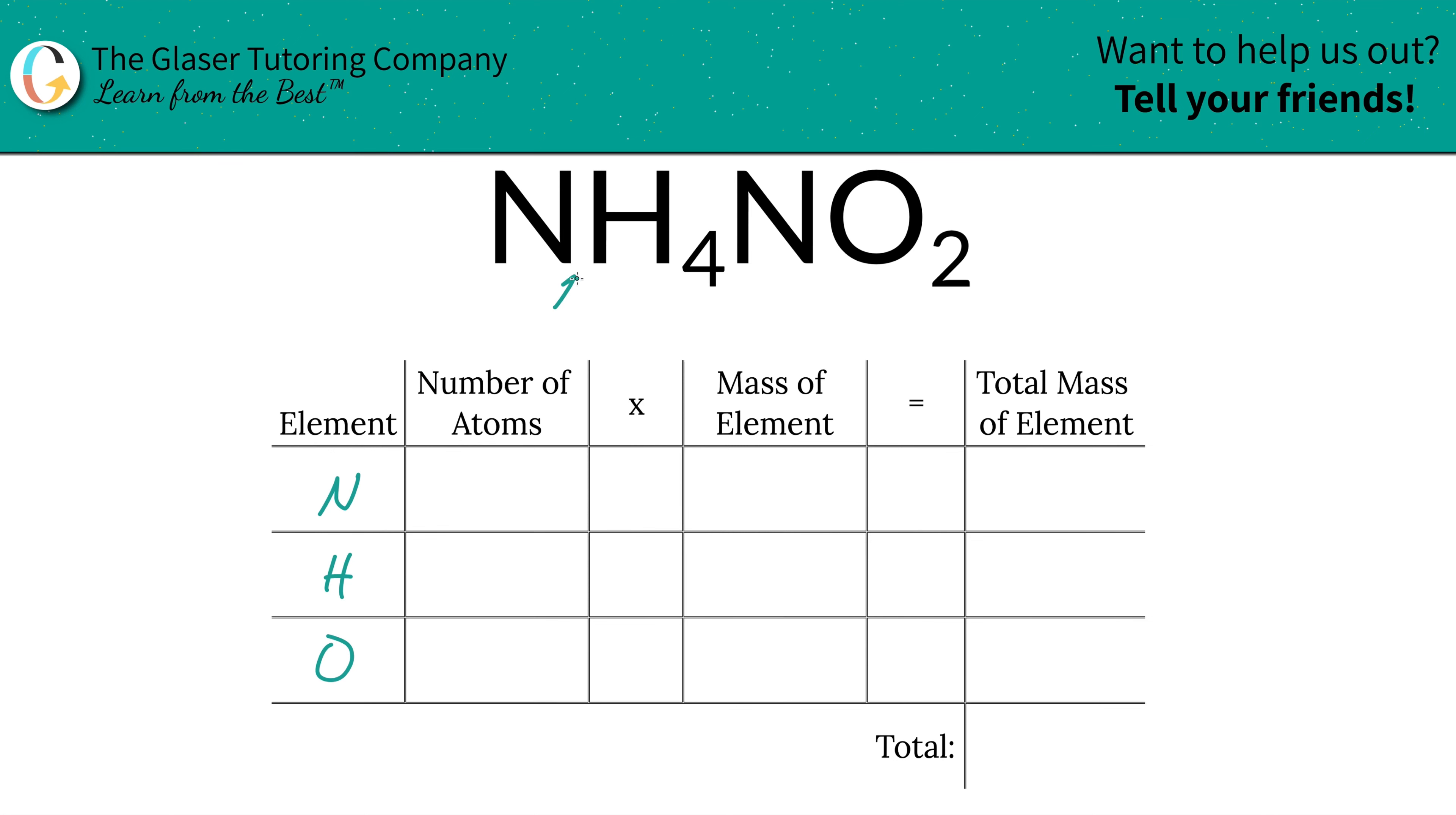Then we're going to write down the number of atoms of each and that's where the subscripts come into play. Now if you don't see a subscript at the bottom of an element, just put in one. Now how many nitrogens do you have in total? Well you have one here and you have one here so there's going to be two in total. The hydrogens, there's four in total and then two oxygens.